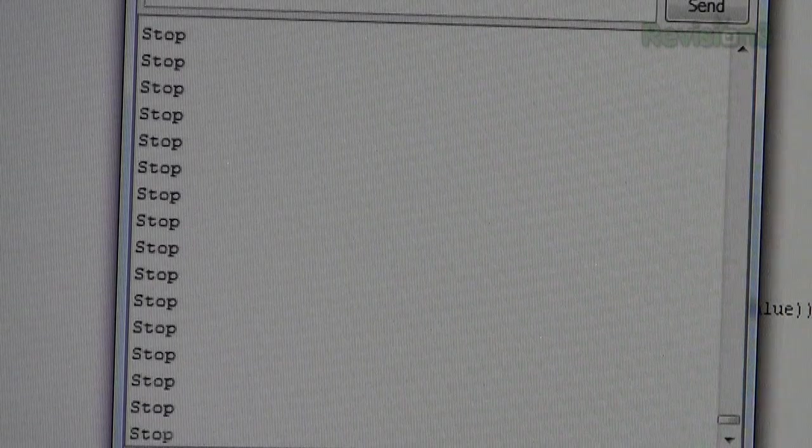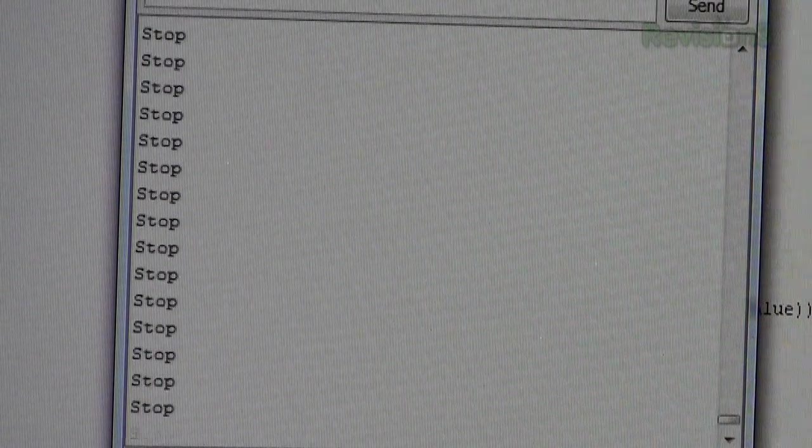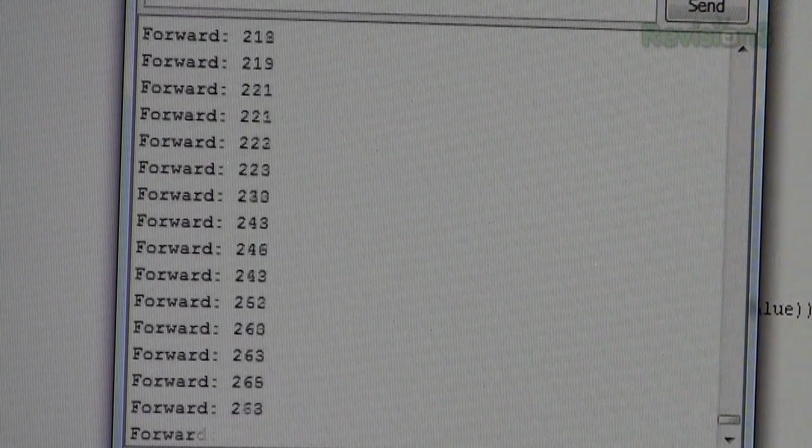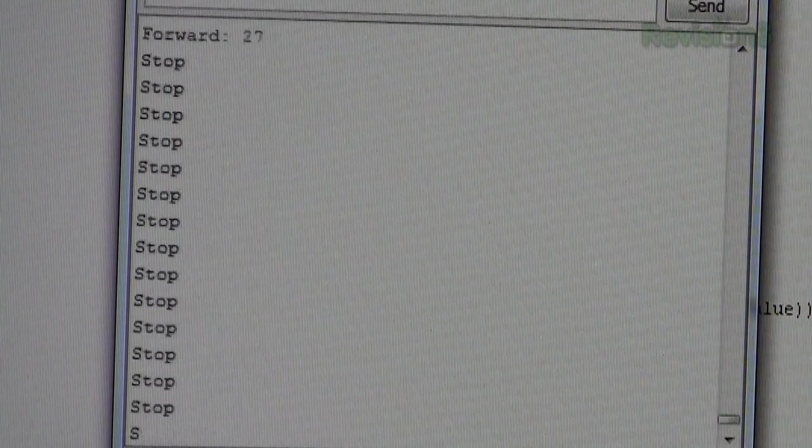All right. So now I have some dead zone on the stick where just jiggling it won't do anything. Well, it shouldn't do anything. So it says stop. But then as you go forward, you see the amount that goes higher, forward full speed, and then also reverse. So the next thing we'll do is hook this up to that motor controller out there. We don't have all the parts yet, but we should have enough to at least make the motor go forward and backward based off this controller.